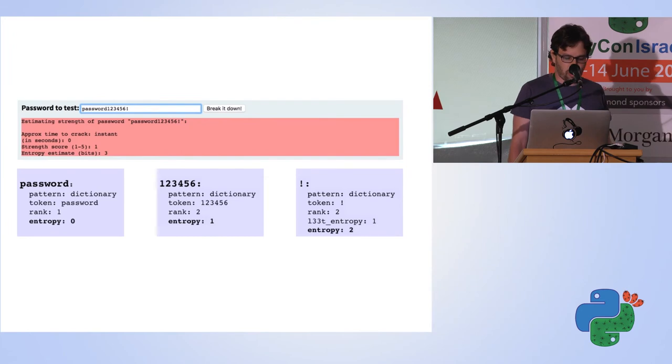Also, we can get this all broken down into pieces. Password is zero, 123456 equals one, and exclamation mark is two. This could be great.